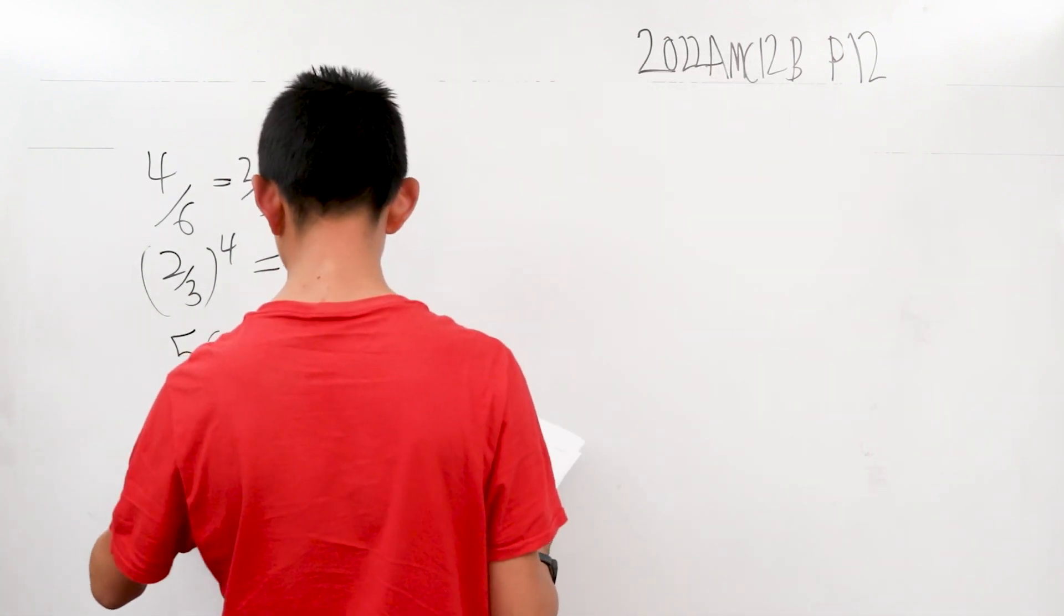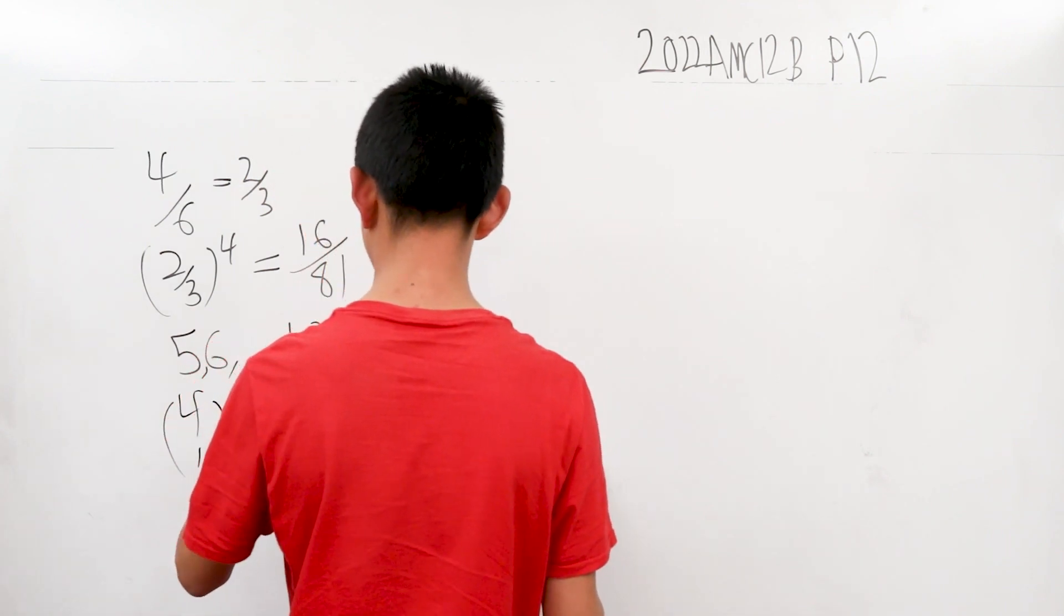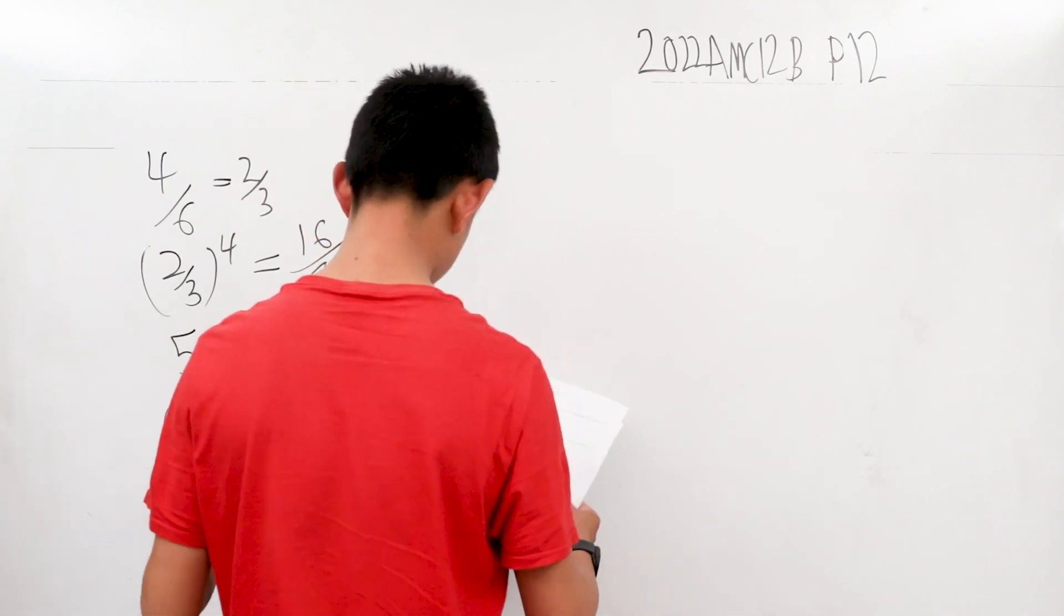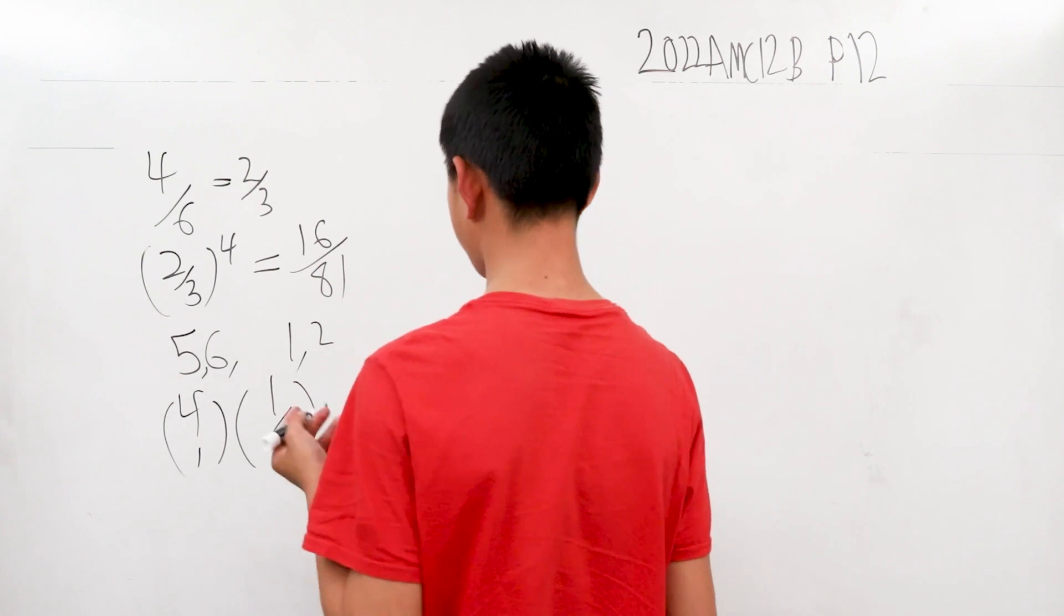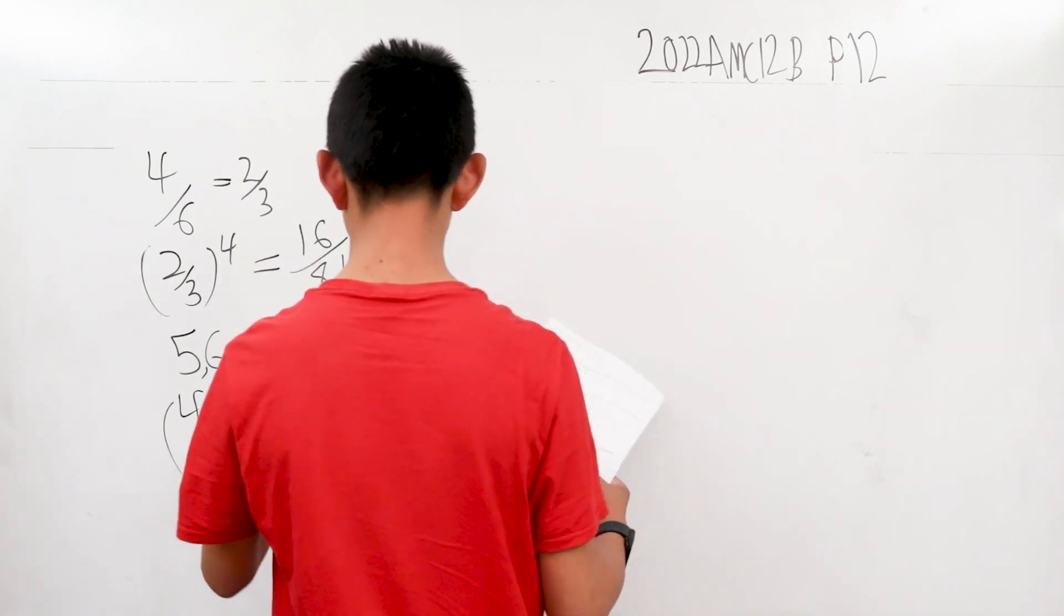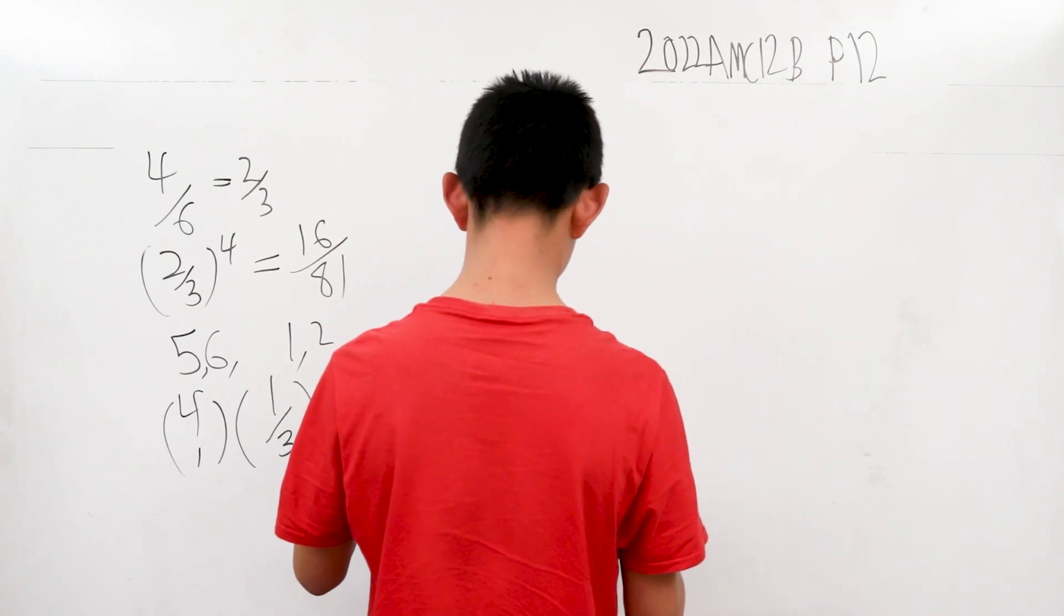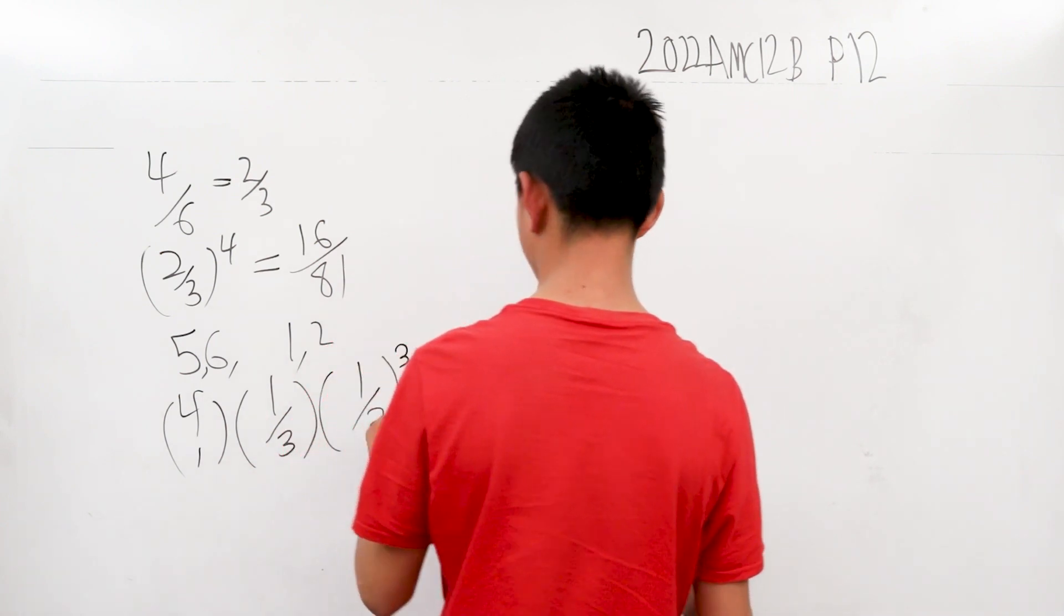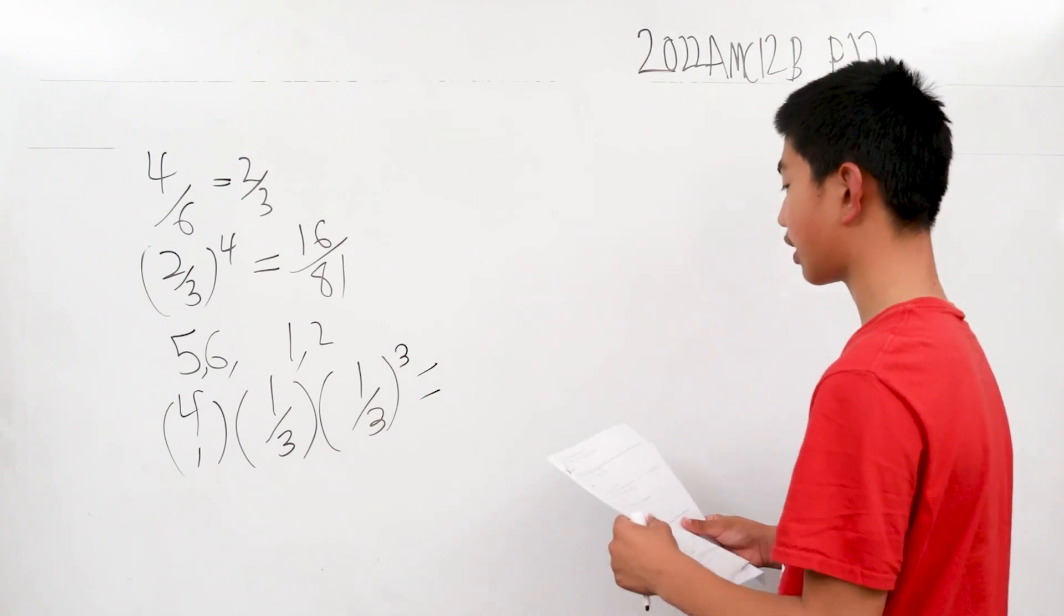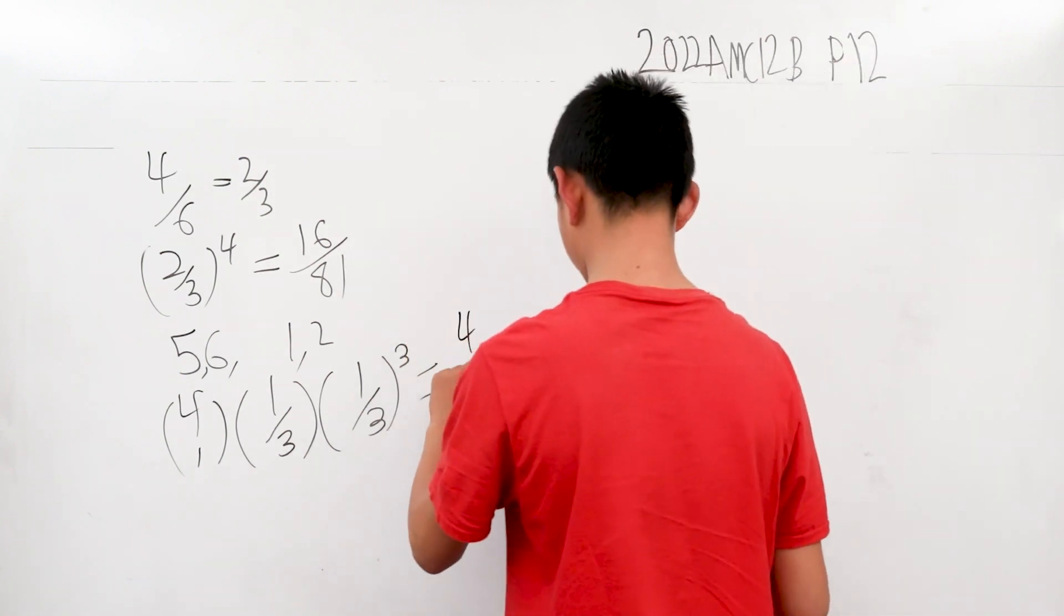Choose one and multiply it by one-third, because that's the probability of choosing two over six, and then one-third to the power of three, because we want to have four of these since there are four dice. This is four over 81.